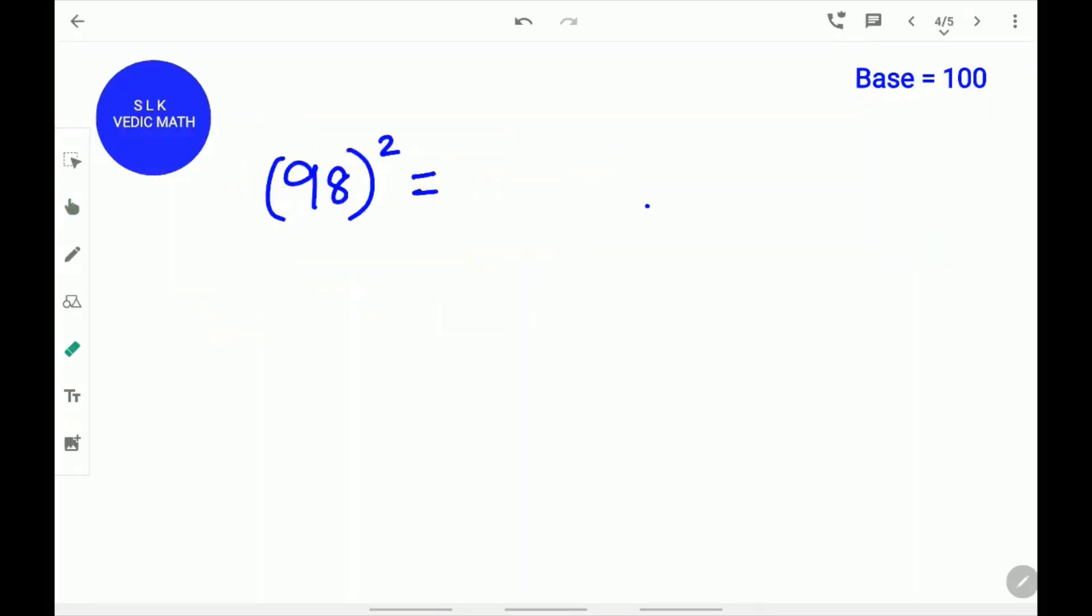Let's try another example. 98 square. First, find the difference from 98 to 100. 100 minus 98 is 2.